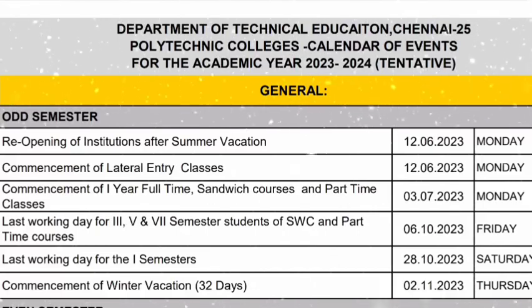First, General Arts Semester. Reopening of Institution after Summer Vacation — we are currently in summer vacation. The reopening date is 12-6-2023, Monday. Next, Commencement of Lateral Entry Classes. Lateral Entry is second year admission, for those with a diploma. First Year Full-Time Sandwich and Part-Time Classes commence on 3-7-2023, Monday.